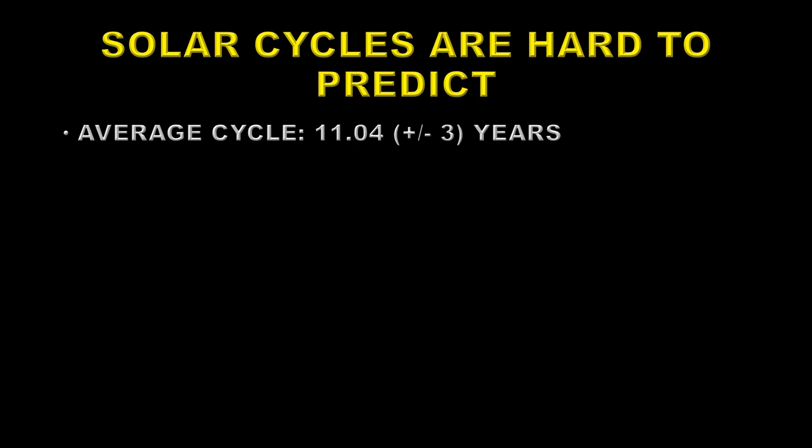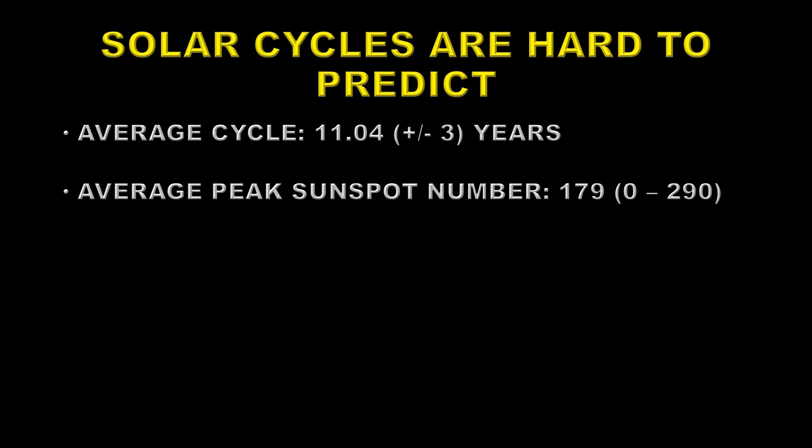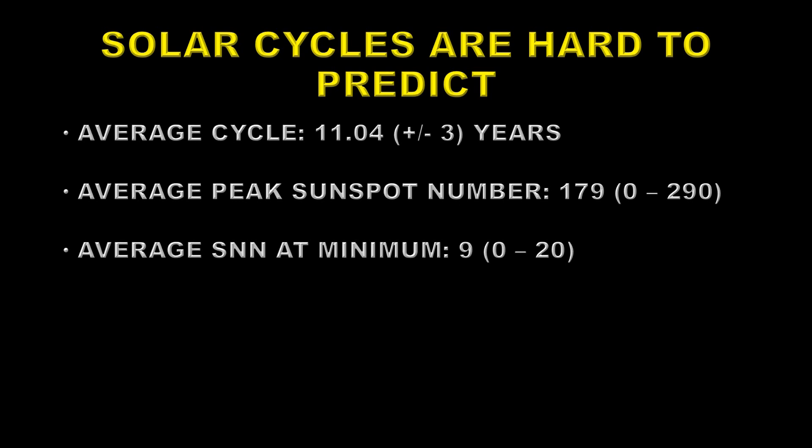The reason is that the average cycle is about 11 years, but the variation is plus or minus three years, and it seems relatively random. The average peak sunspot number is about 180, but it varies from zero — as during the Maunder Minimum — to 290, which is the highest peak we've had so far. The average sunspot number minimum is about nine, but it varies by a factor of two, between zero and 20.